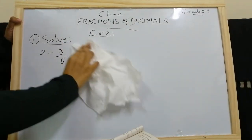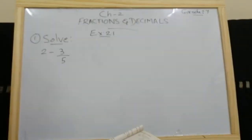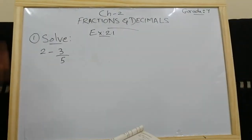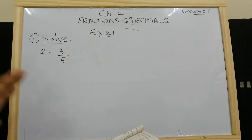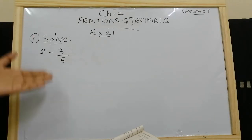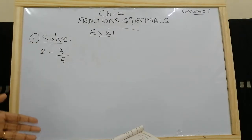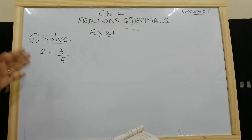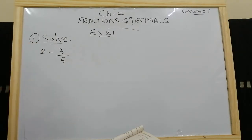For fractions, one thing we have to remember is that in case of addition and subtraction, the denominator has to be the same. But in case of multiplication and division, the denominators need not be the same. These are the things you have to remember.